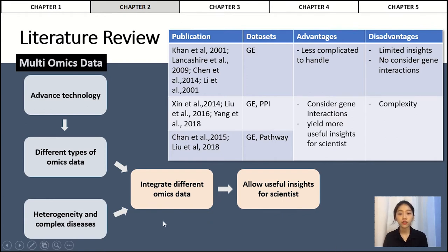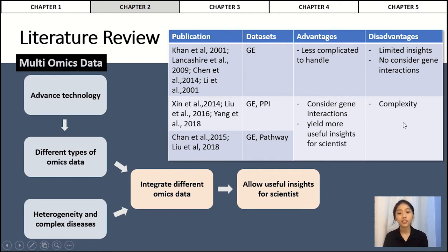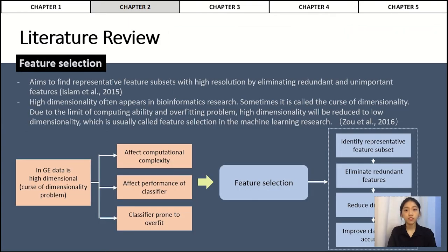For example, in the field of identifying potential biomarkers of certain diseases, Chan et al. 2015 and Liu et al. 2018 had utilized both pathway topology and gene expression data, while Liu et al. 2016 and Yang et al. 2018 had integrated PPI data into gene expression data. The limitation of using gene expression data alone is that the results will have limited insights and do not consider gene interactions. Therefore, integrating multiple or mixed data can help solve this problem, though it may be more complicated compared to using only gene expression data.